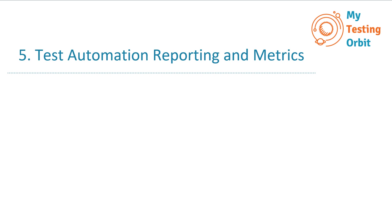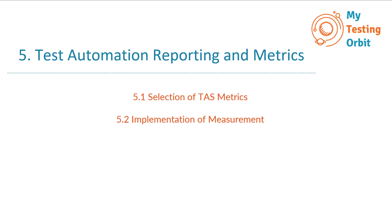We will explore test automation reporting and metrics through four key sections. The first one is 5.1 Selection of TAS Metrics, which focuses on choosing the most relevant metrics for your test automation project. Then we have 5.2 Implementation of Measurement, where you will learn how to put measurement into action and gather valuable data effectively.